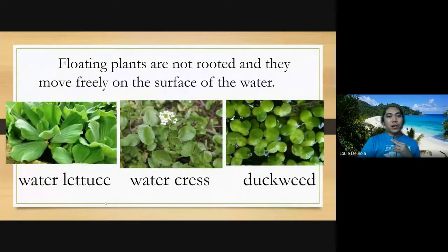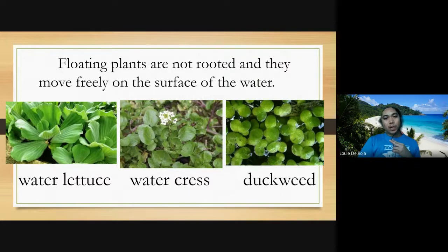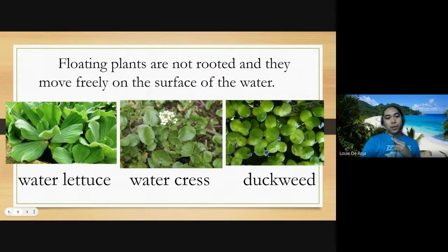Floating plants are not rooted and they move freely on the surface of the water. These are plants with no roots, or if they have roots they are very small. They just float on the water. Examples are water lettuce, watercress, and duckweed.